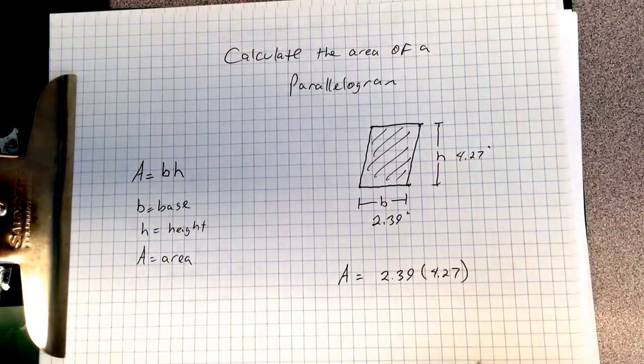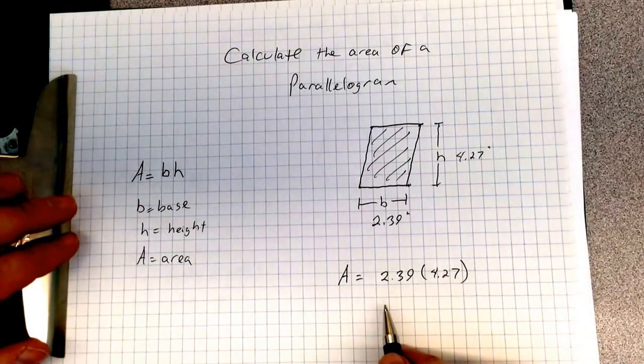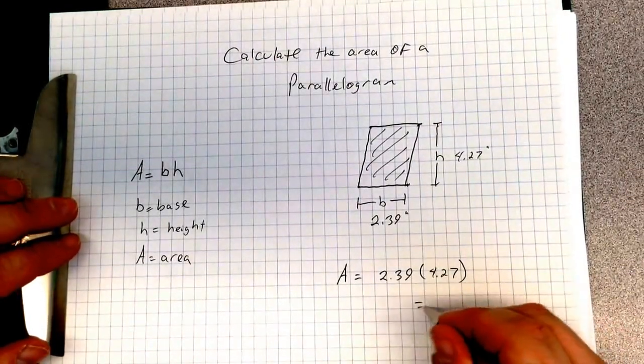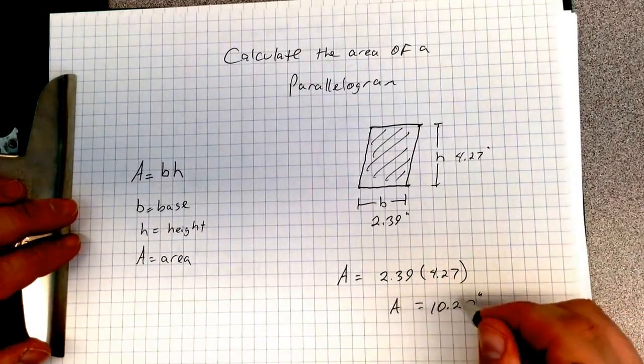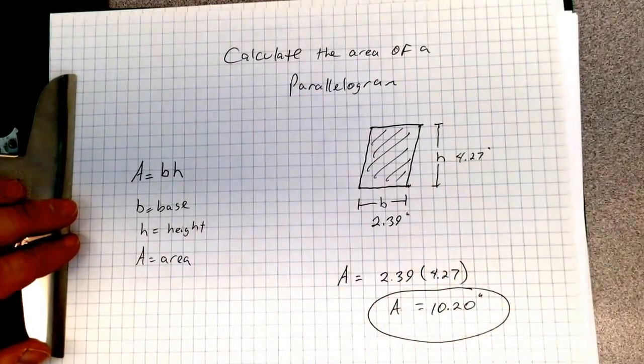So if I use my friendly calculator, 2.39 times 4.27 equals 10.20. So my area equals 10.20.